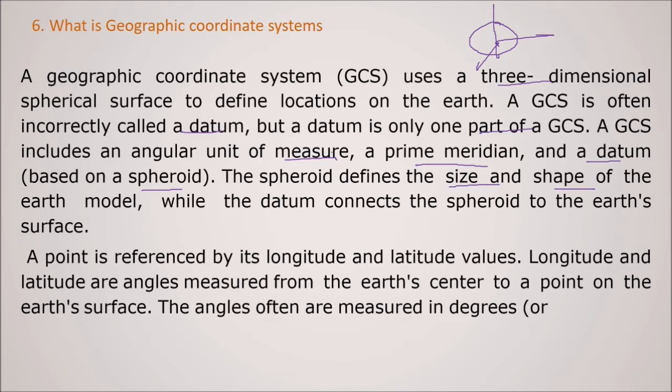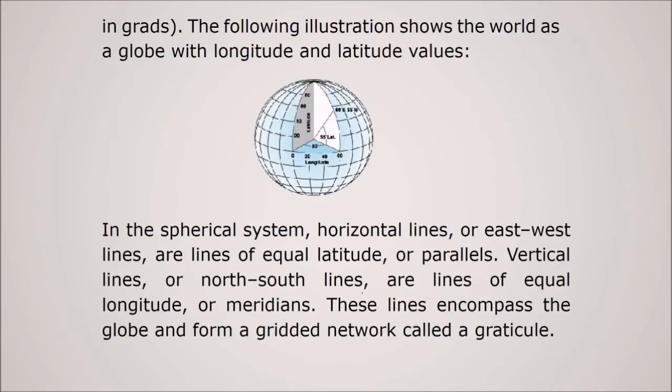So the point is referenced by the latitude and the longitude values. The latitude and longitudes are actually the angle which are measured from the earth's center to a point on the earth's surface. The angles often are measured in degrees or in gradients. So this figure shows the world as a globe with the longitude and latitude values. Now see this is the center and we say this is a prime meridian. So this angle, this angle, this particular angle is our longitude.